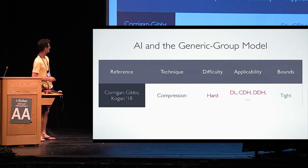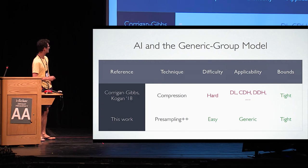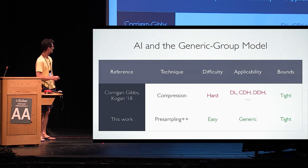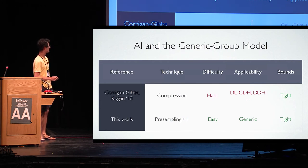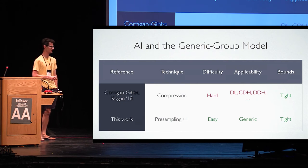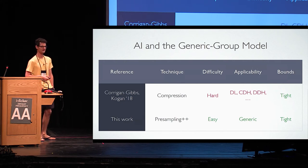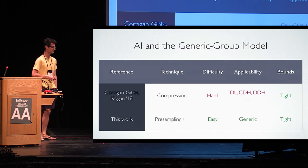The same applies in the generic group model. At EuroCrypt this year, Corrigan-Gibbs and Kogan showed how to derive tight bounds using compression proofs. It also turns out you can use the pre-sampling approach in the generic group model and again obtain all the advantages of pre-sampling.